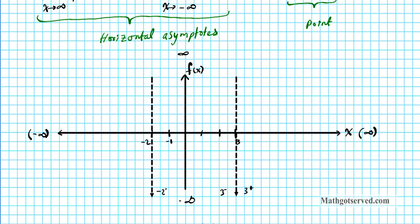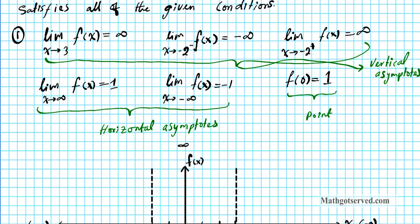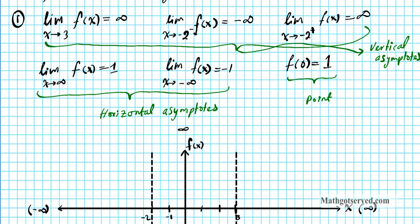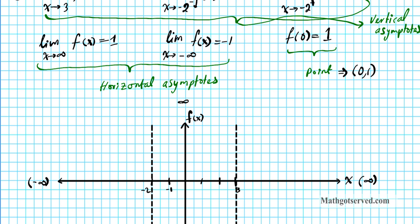This is negative 2 from the right and this is negative 2 from the left. In this problem, as you are approaching 3 from both directions, your function is going to infinity. Let's start from the center — we have the point (0, 1). Let's go ahead and plot that point: 1, 2, 3, 4, 5 on the y-axis. So (0, 1) is right here.